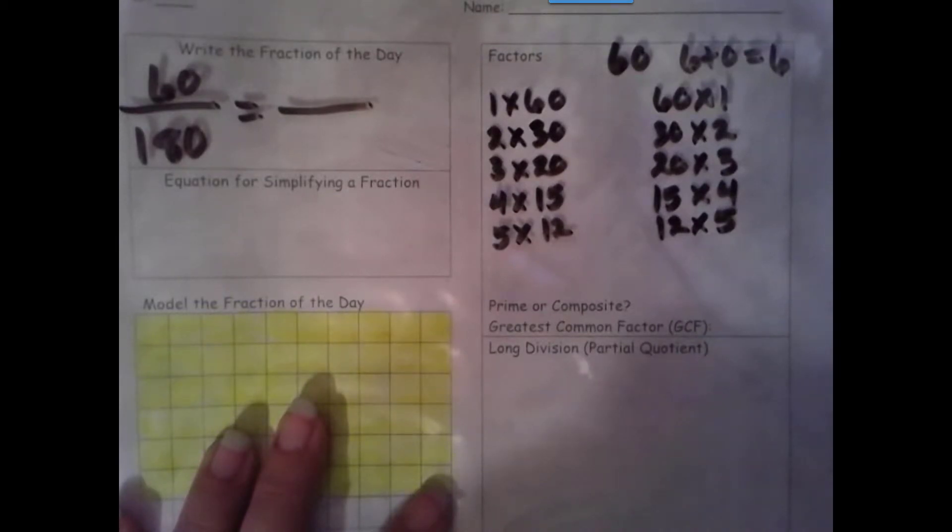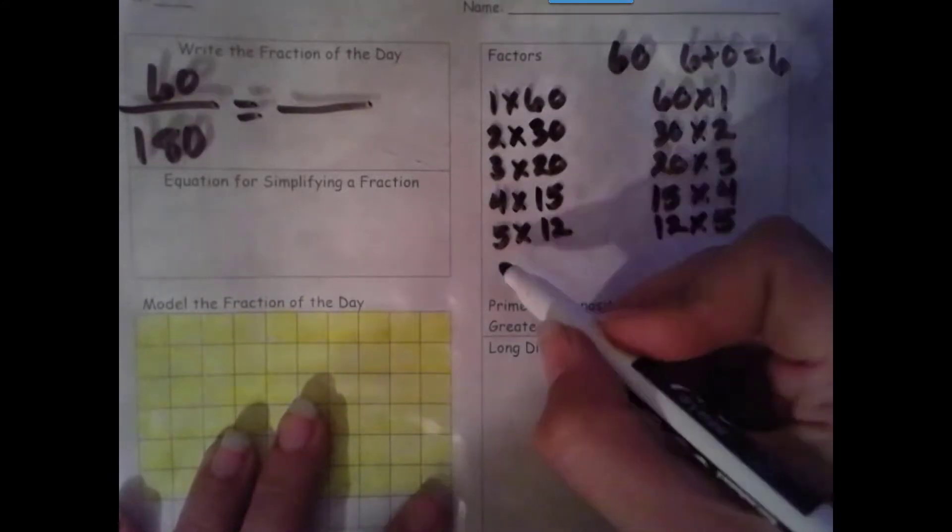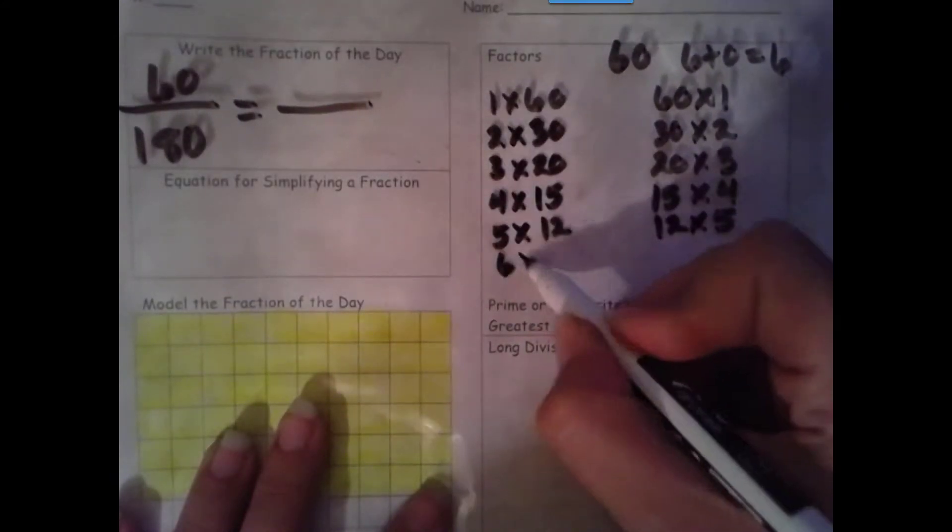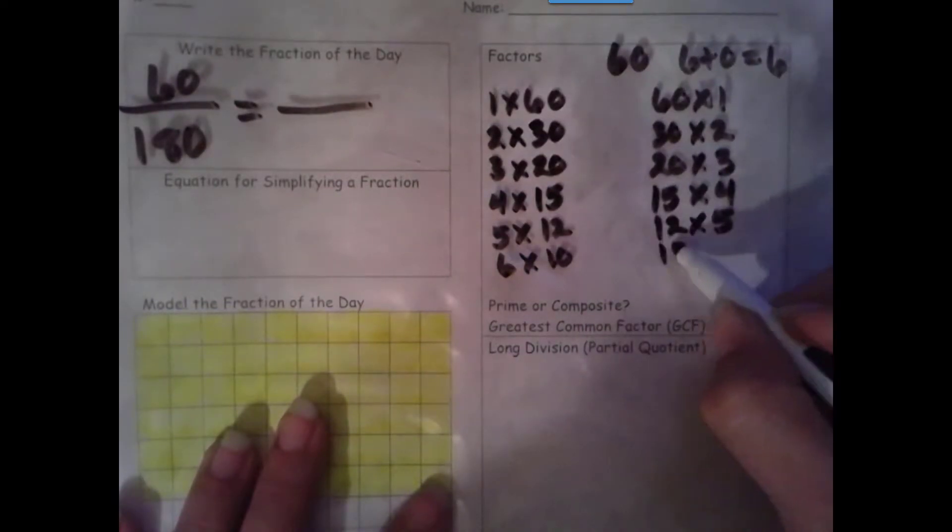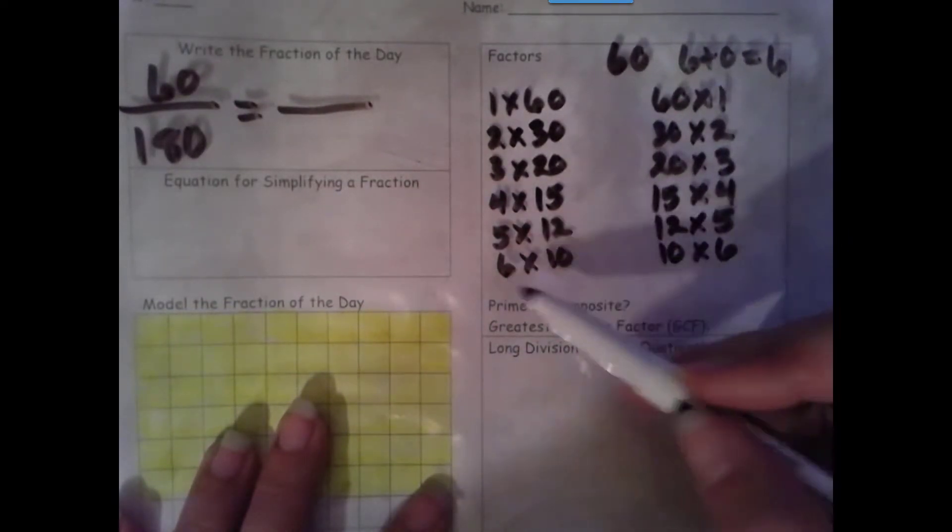Next we try 6. The rule for 6 is that both 2 and 3 are factors. Both 2 and 3 are, so 6 is a factor. 6 times 10, 10 times 6. We only need to check the counting or natural numbers between 6 and 10, so that's 7, 8, 9.